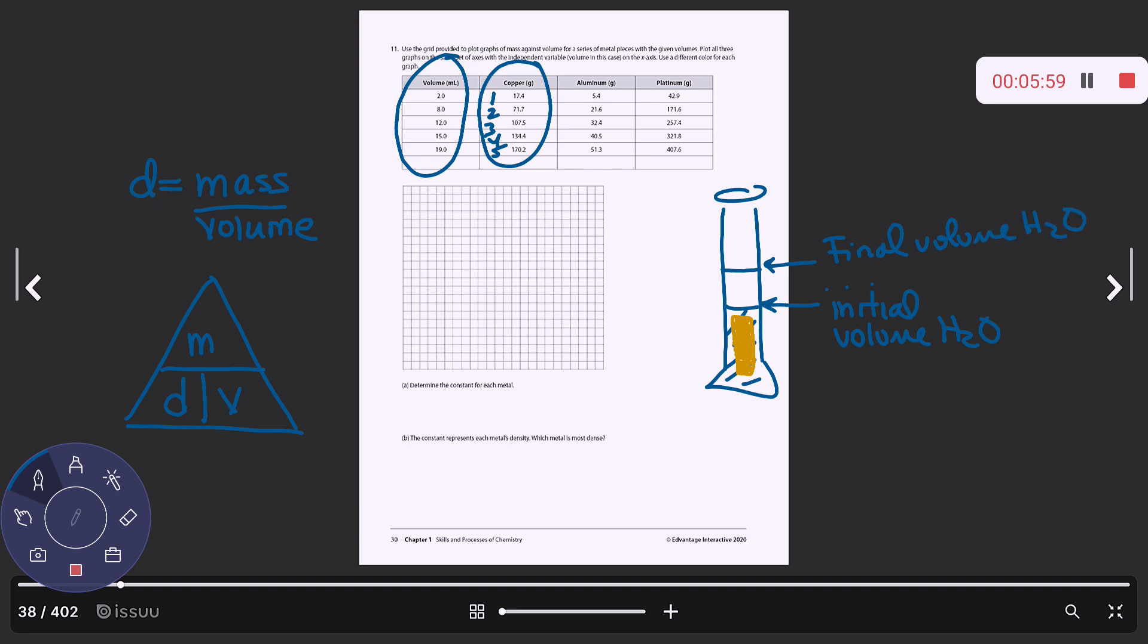So in order to get the volume of the brass metal, we would take the final volume minus the initial volume. So let's say this was like five milliliters and this was like eight milliliters. So this would be eight minus five. So the volume of the brass cylinder would be, or the copper cylinder, sorry, would be three milliliters. That's volume by displacement. That's what you will do.